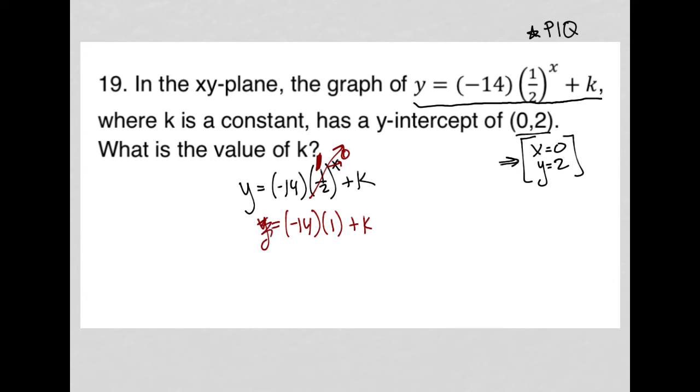But actually, I know what y is, right? So I'm not going to put a y there, because I know that when x equals 0, y is equal to 2. So this should actually say 2 equals all of that.